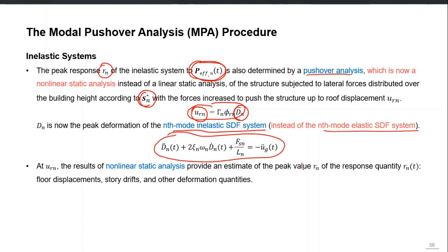This is the nonlinear force-deformation behavior and we calculate D_N from it. We perform the nonlinear static analysis instead of the dynamic analysis as in the UMRHA procedure. We use pushover analysis to calculate D_N, and from U_rN — the roof displacement for that particular mode — we extract all the responses from the pushover analysis of that mode.